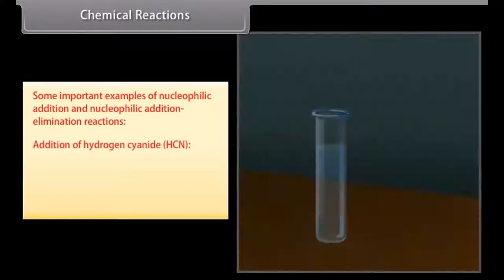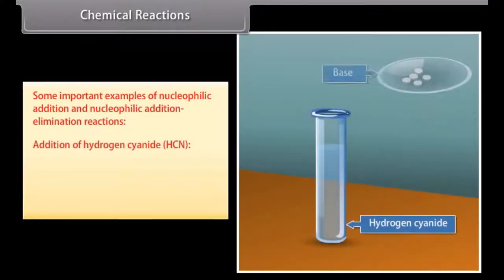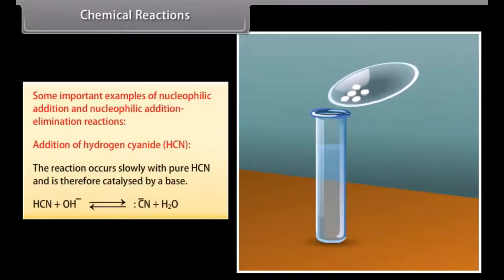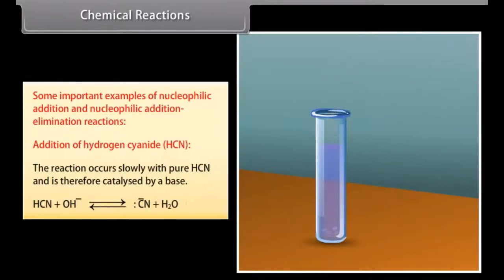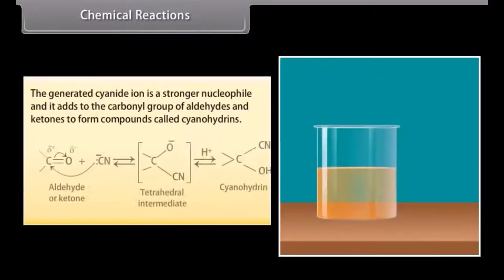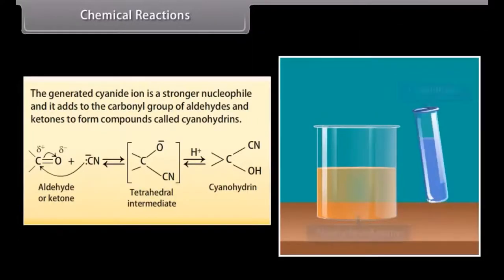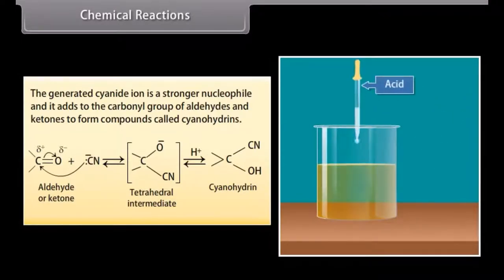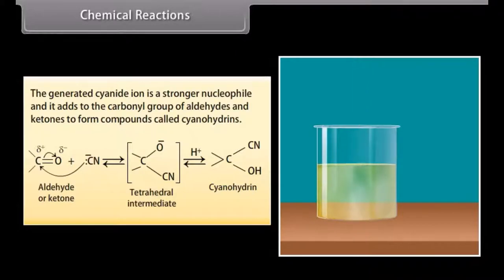Addition of hydrogen cyanide: The reaction occurs slowly with pure HCN and is therefore catalyzed by a base. The generated cyanide ion is a stronger nucleophile and it adds to the carbonyl group of aldehydes and ketones to form compounds called cyanohydrins.